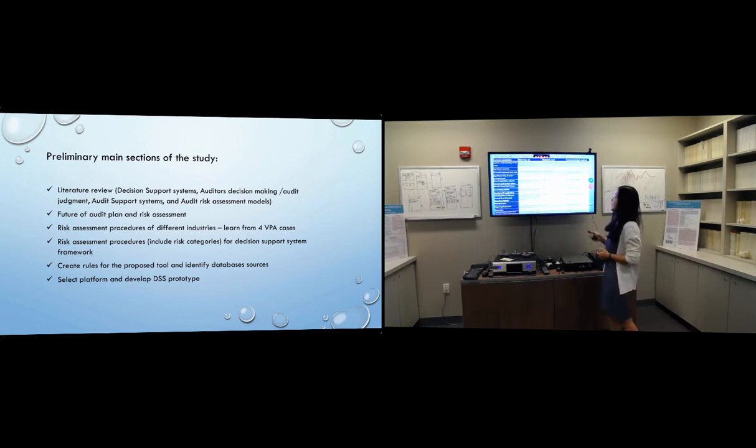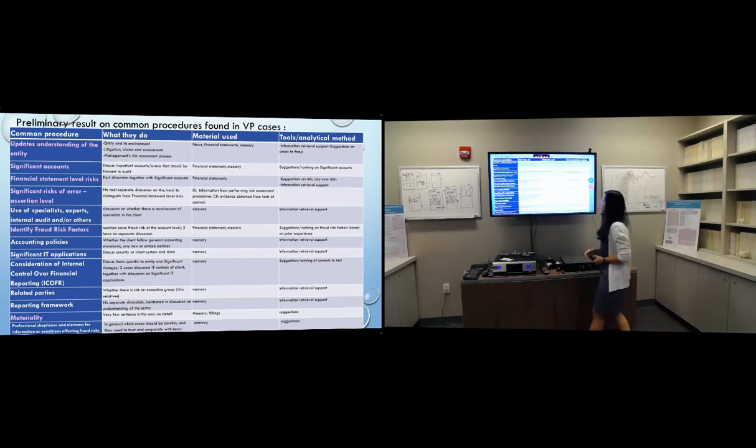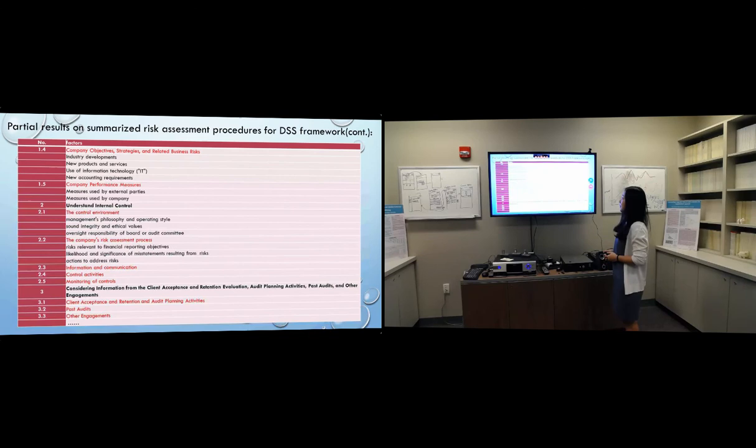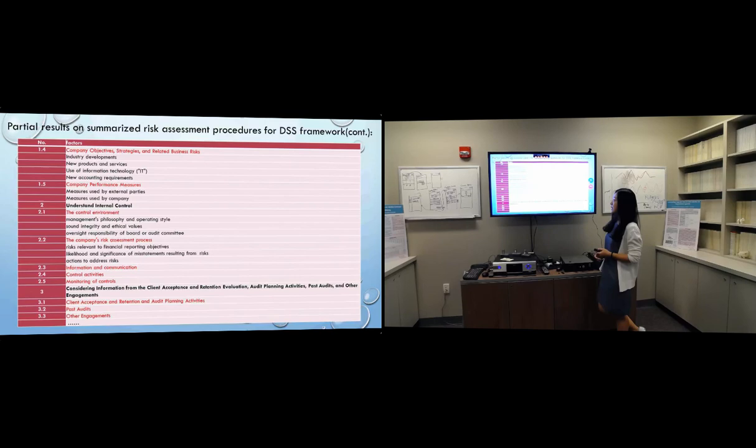So this is the preliminary result on common procedures in the verbal protocol cases. The left side are the procedures that are commonly appeared in the four cases. These are partial results on the summarized risk assessment procedures that should be included in the decision support system. And these topics should be considered by the auditors during the risk assessment. So these are some of them.